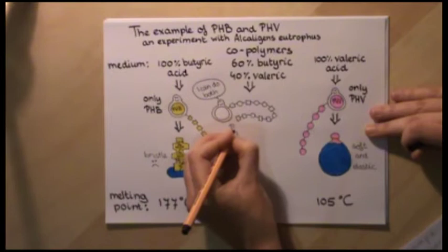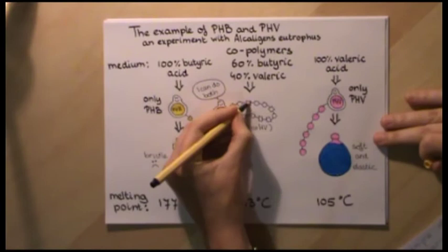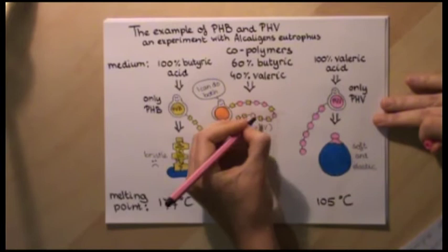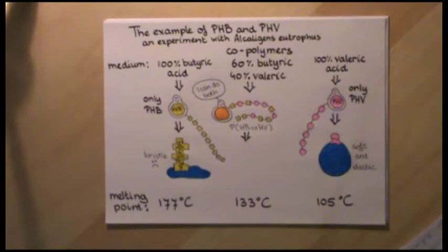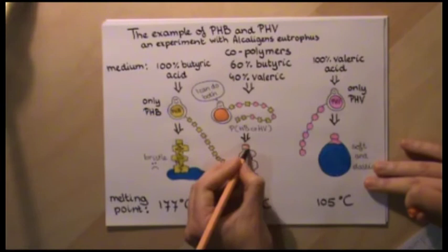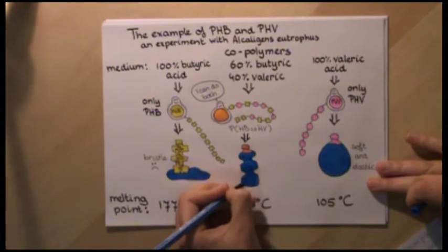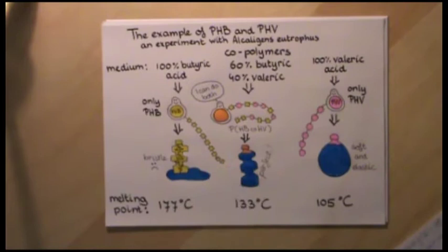It turns out the PHA synthase enzyme easily polymerizes 3-hydroxybutyryl coenzyme A with 3-hydroxyvaleryl coenzyme A, forming a co-polymer of PHB and PHV together called polyhydroxybutyrate-co-hydroxivalerate, or in short PHB-co-HV. Depending on the amount of PHB and PHV in this co-polymer, it has different melting points and flexibility.